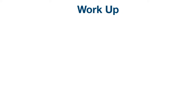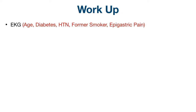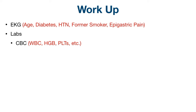Let's go through workup considerations and why they should be ordered. Hopefully you thought of an EKG to assess cardiac etiologies, given the patient is a 68-year-old male with cardiovascular risk factors like hypertension, diabetes, and a former smoking history, presenting with epigastric abdominal pain. Labs should also be ordered, including a CBC or complete blood count. Although nonspecific, the white blood cell count may be abnormal with infectious or inflammatory causes. Given conditions on your differential may require intervention, anticoagulation, reversal of bleeding, or are associated with bleeding, it's good to have hemoglobin and platelets as well.